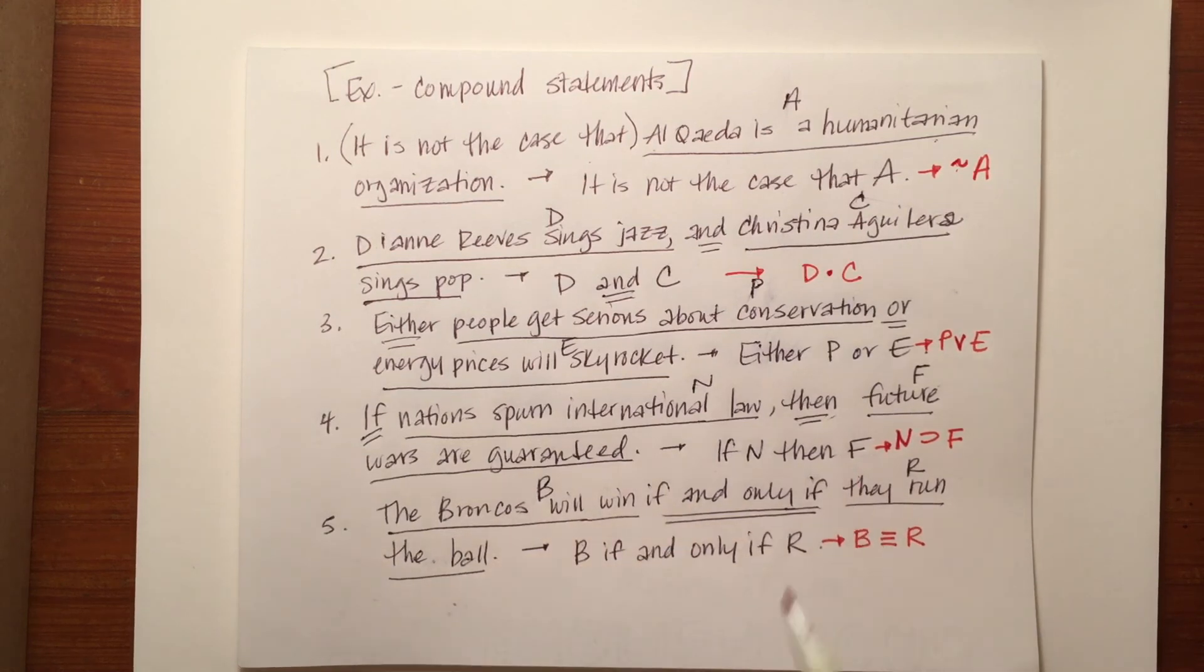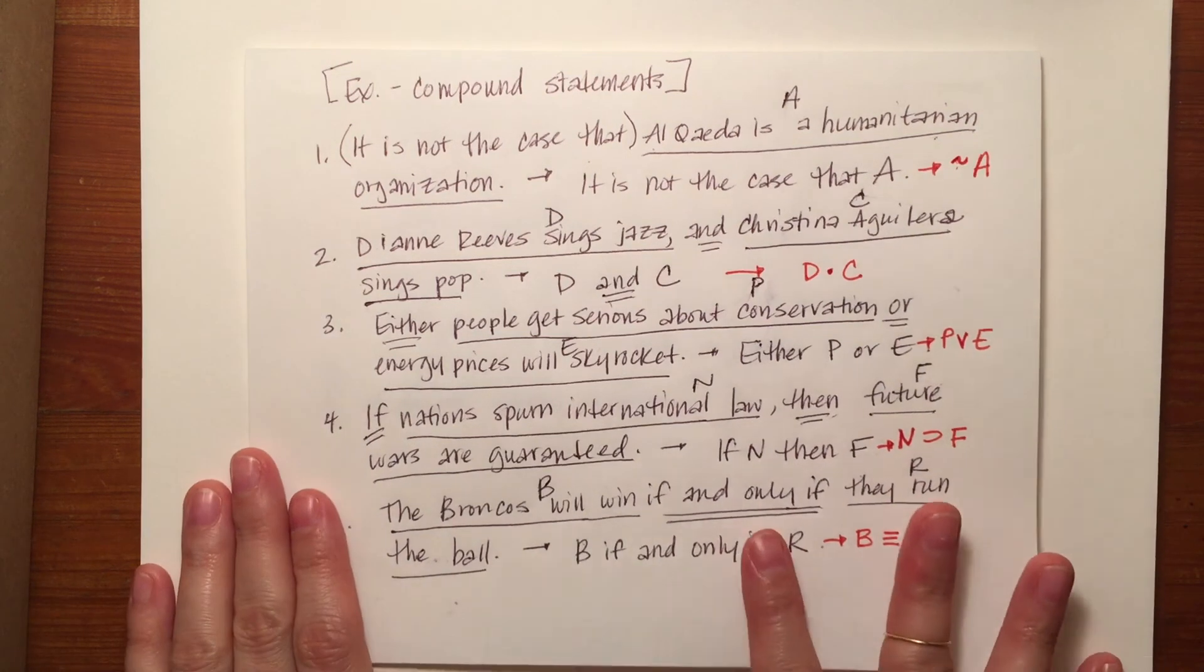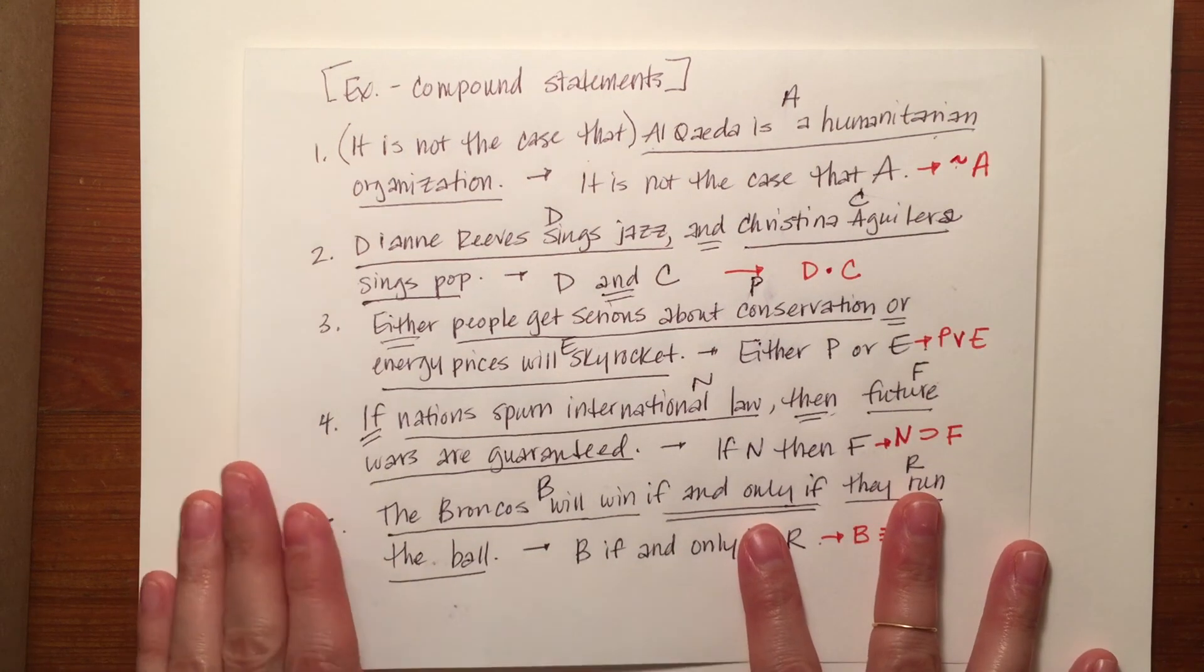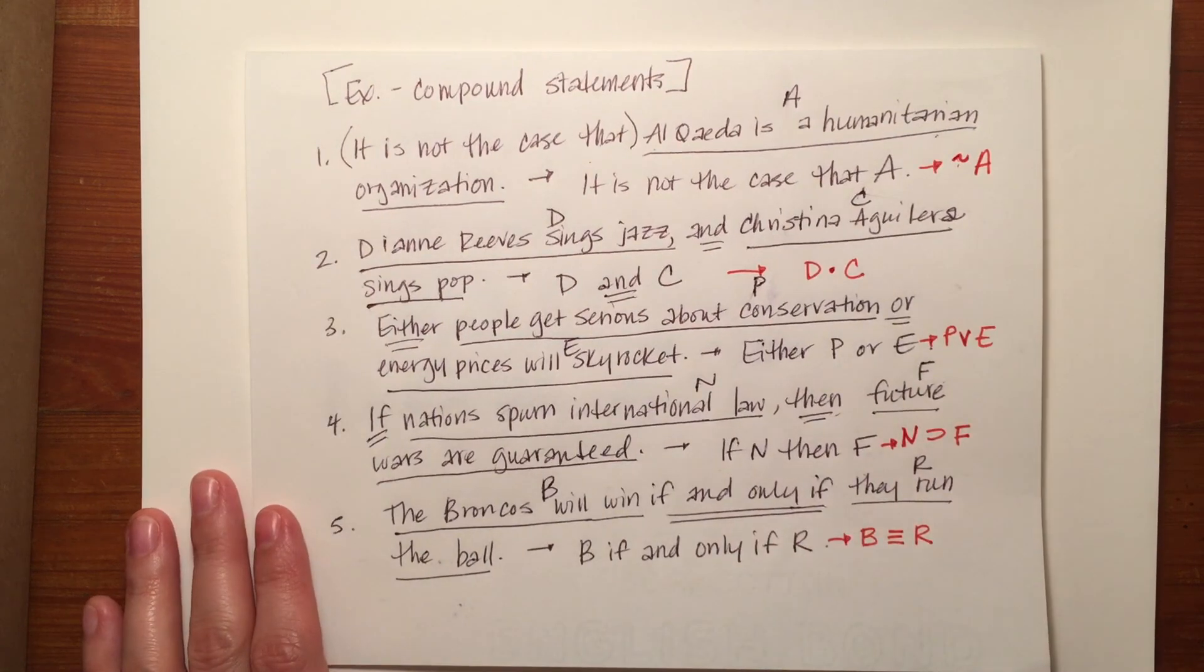And 'B if and only if R' becomes B triple bar R. So you're not only looking to translate statements but also the other part of those compound statements that could be translated by the operators. I'll show you more examples of this in the next video.